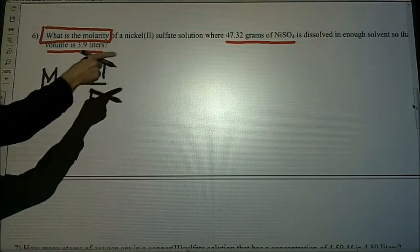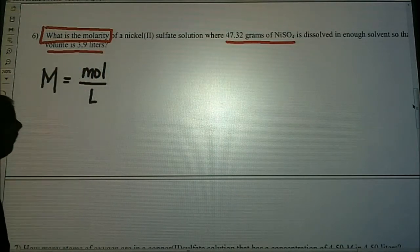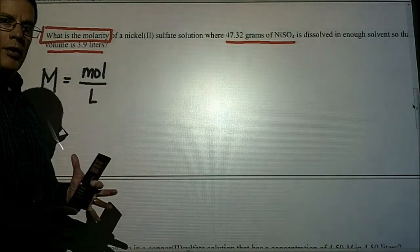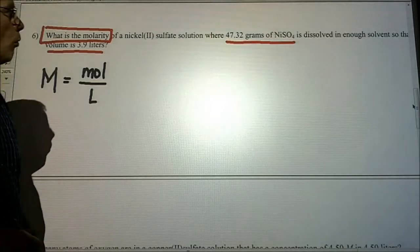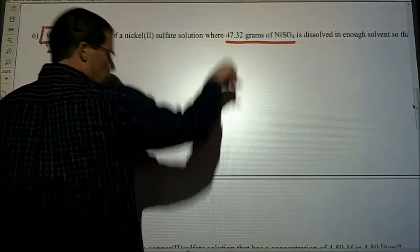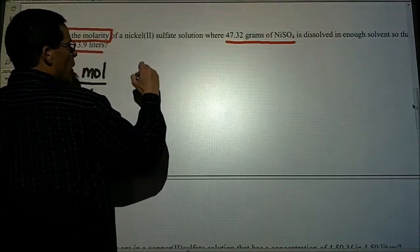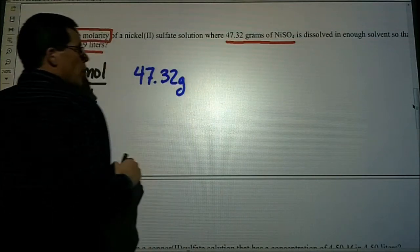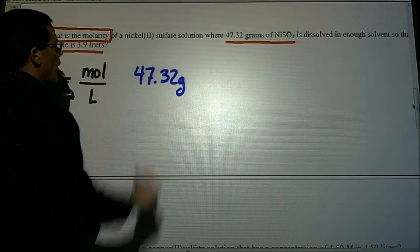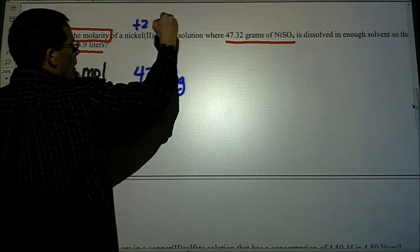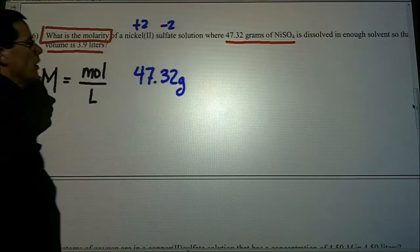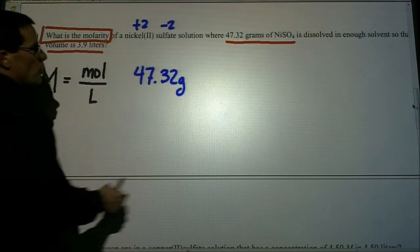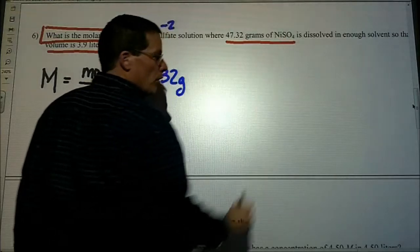We have grams, so we need to convert the grams to moles. Now you can put this all in one equation, but I'll show it stepwise here first, and then I'll show you how you can do it all in one problem. So we need to change this 47.32 grams of nickel sulfate. I wrote the formula for you, but be aware that the nickel has a plus two charge and sulfate has a negative two charge, so you're going to have one nickel with one sulfate.